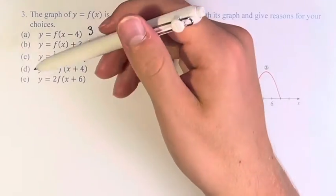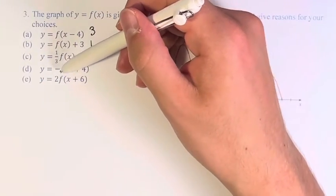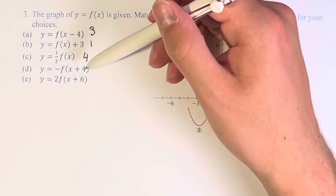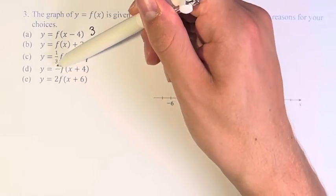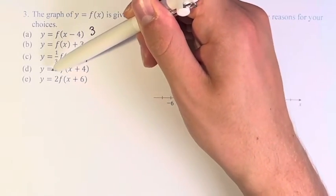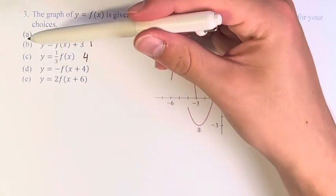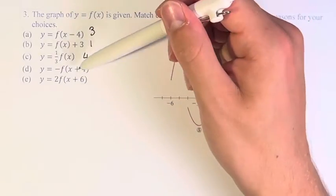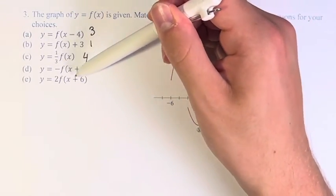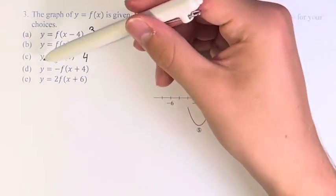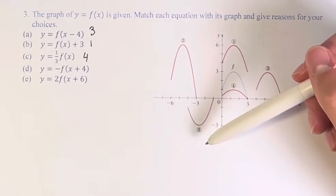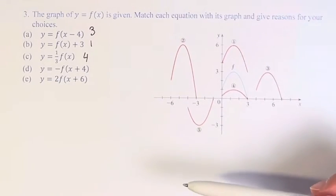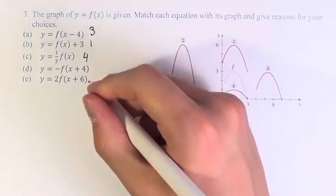Next, we have y equals negative f of x plus 4. We can see here that this negative sign is on the outside of the function, which means it's being reflected about the x-axis. And then we're adding 4 afterwards. However, we can see that only one of these functions that are left, 2 and 5, has been reflected. So therefore, we know that 5 is d.